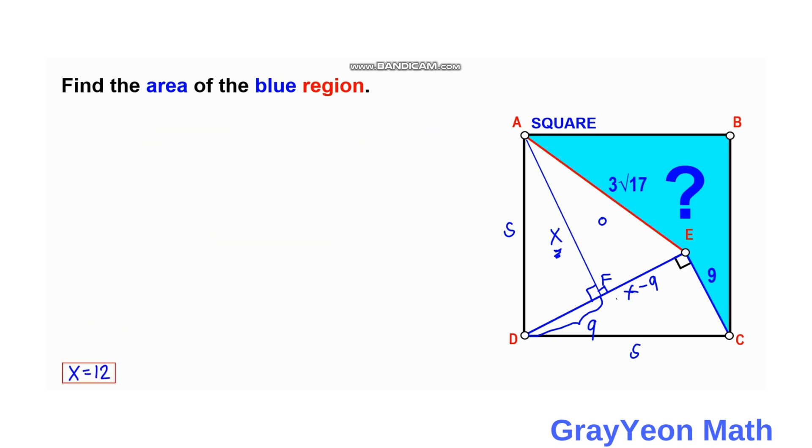So knowing that X is equal to 12, we can replace this X to 12. And this becomes 12, and this becomes 12 minus 9, which gives us 3.